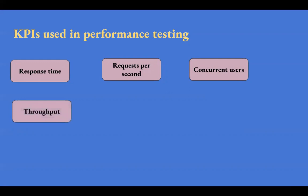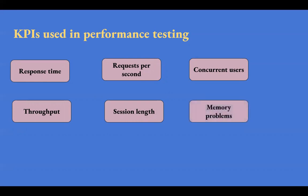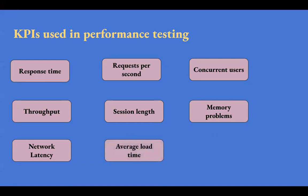Throughput is the measurement of the average bandwidth consumed. Session length calculates how long someone spends on your application and how long the session is maintained. Memory utilization validates and handles if there is a memory leak. Network latency — in performance testing, the latency of a request is the travel time from client to server and server back to the client; some testers call it network delay. Average load time is another important metric — during performance testing, the loading time is important.